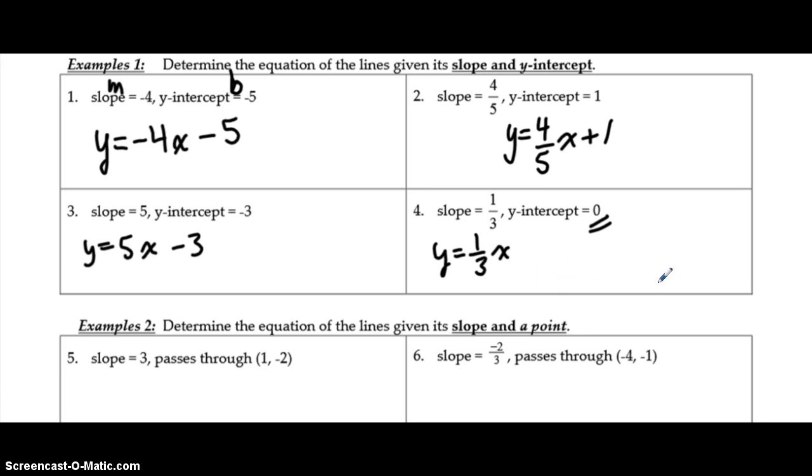One other scenario that's not shown here is if the slope was 0, if it was a horizontal line, we would have a 0 in front of the x plus whatever our y-intercept is. And in that case, that would be gone altogether.